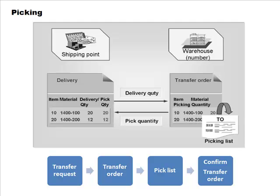The transfer order creates the pick list, based on which actual picking is done, and then the pick quantity is updated on the delivery — for example, 50 units have been picked, based on confirmation entered by the picker. So the overall process is: a transfer request is created, a transfer order is created, a pick list is generated, somebody picks and confirms the transfer order, and then quantities are updated on the delivery.